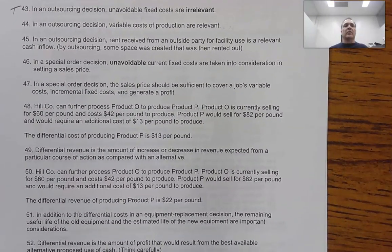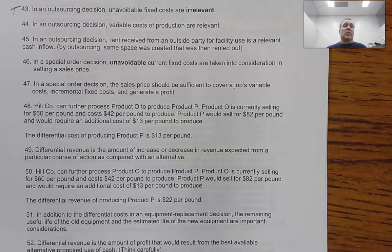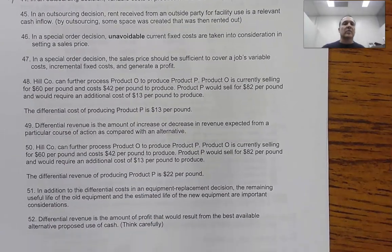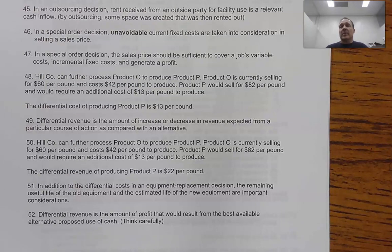Question 44 says: 'In an outsourcing decision, variable costs of production are relevant.' Think about it — variable costs we would incur if we make it ourselves, we won't incur if we outsource it. That is a difference because it's either doing it or not doing it, so this is a true statement. Variable costs are almost always relevant. Sometimes between alternatives the variable costs might be the same, but certainly in outsourcing and special order decisions, variable costs always matter.